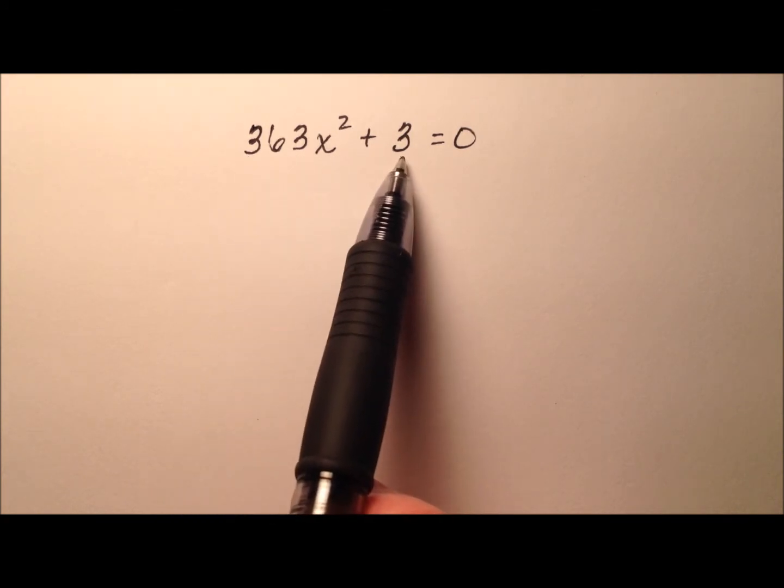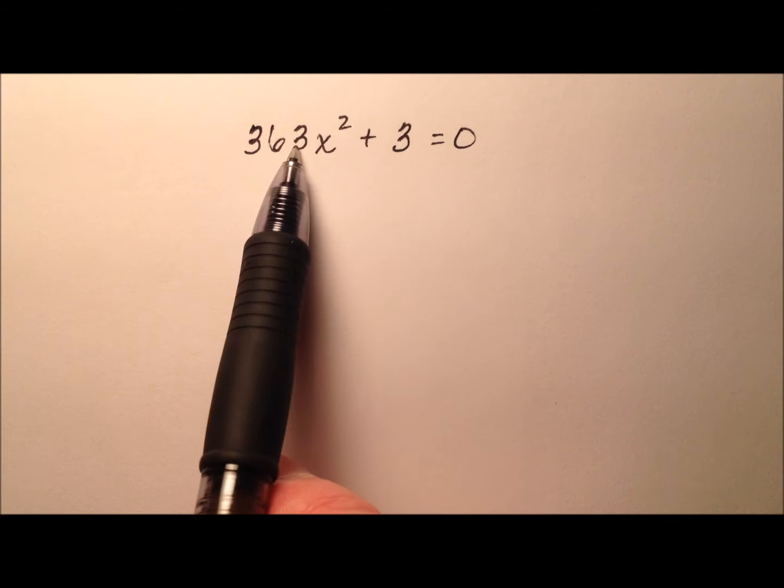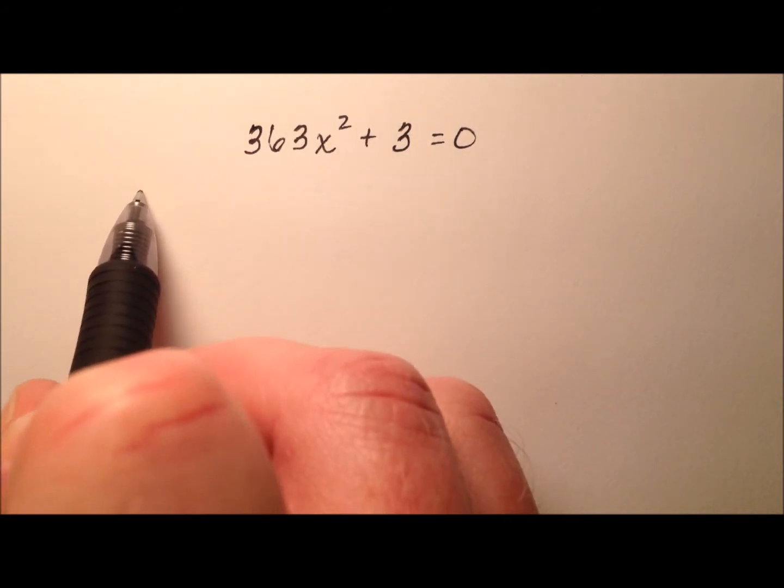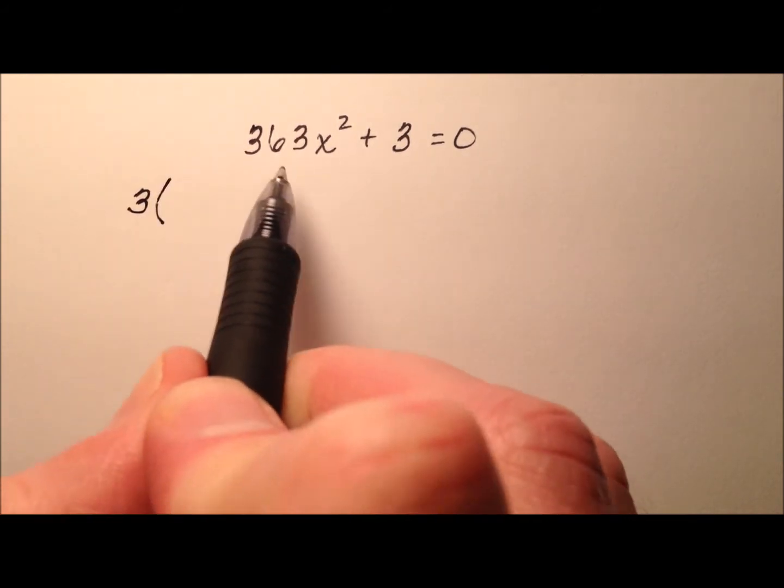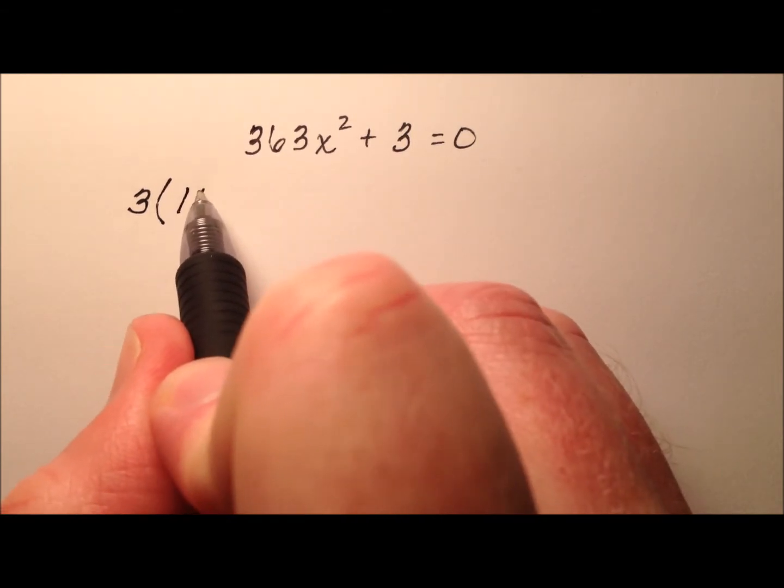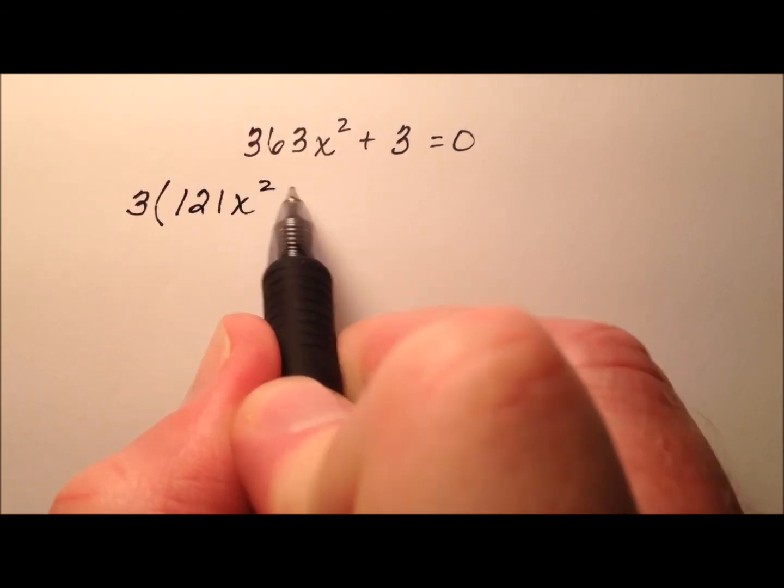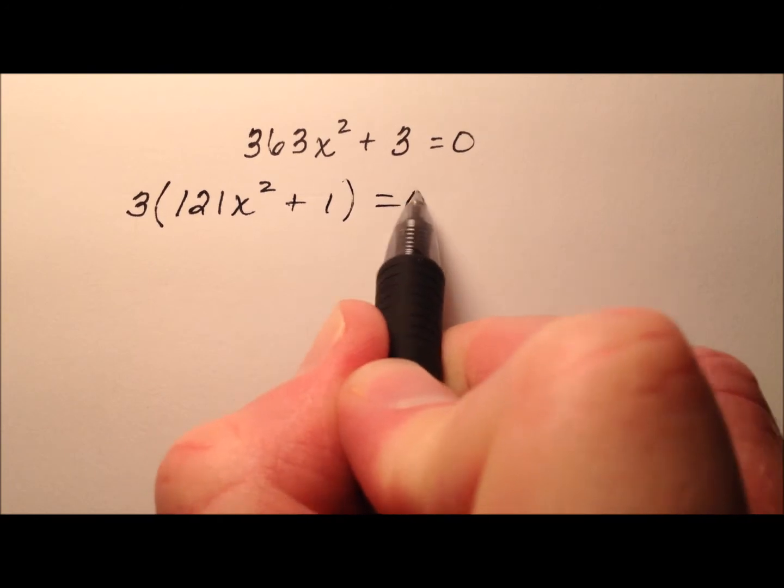So the first thing I realize is that I can pull a greatest common factor out of these terms, and it's a 3. So let's go ahead and divide a 3 out of both of those terms, and what I have left is 121x squared plus 1.